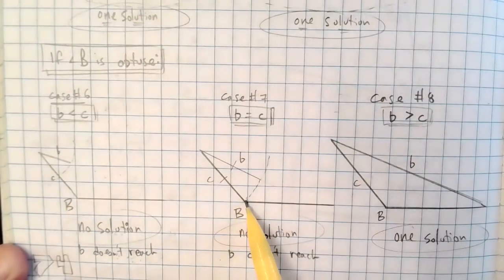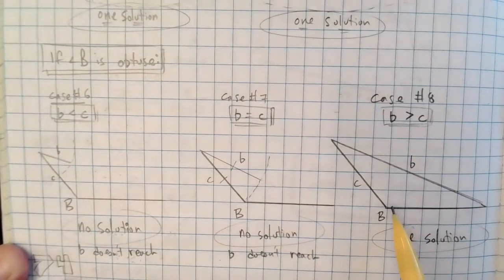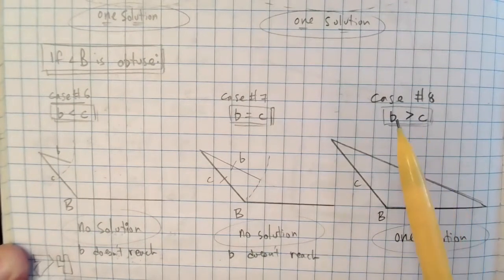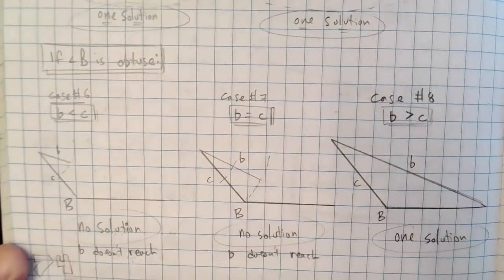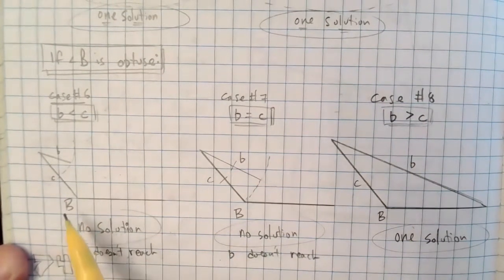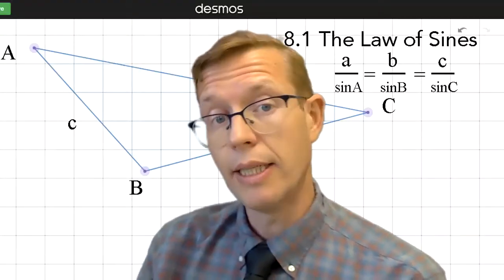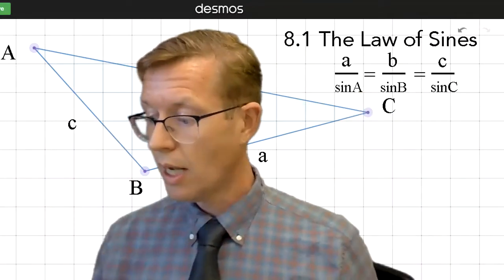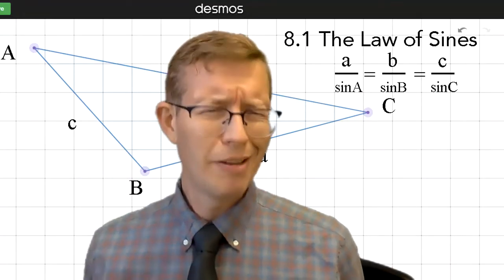And if b is greater than c, even if it's just a teensy bit greater than c, it will hit somewhere on side a here. So you will get one solution as long as b is greater than c. Because some of these problems that you're given are just not going to make triangles. So you have to be aware of that. Look at if I would categorize it in two different ways. I would look at if the angle is acute or obtuse. And then I would go down those different rabbit holes, finding out if the two sides are given, which one is larger than the other one. And of course, draw a picture.